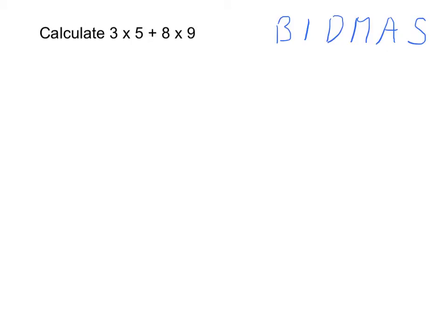3 times 5 is 15. We then still have this plus sign, and 8 times 9 is 72.